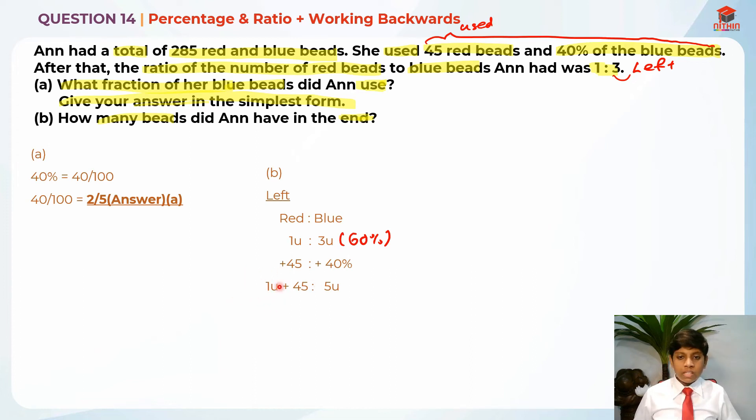1 unit is basically like algebra. It's an algebraic expression. But algebra and whole numbers cannot mix. So that is why it just remains like this. And this is 5 units. After that, we know that the total is 285. This 1 unit plus 4 units plus 5 units is 285. For part B, 1 unit plus 45 plus 5 units is equal to 6 units plus 45. So 6 units plus 45 is equal to 285.